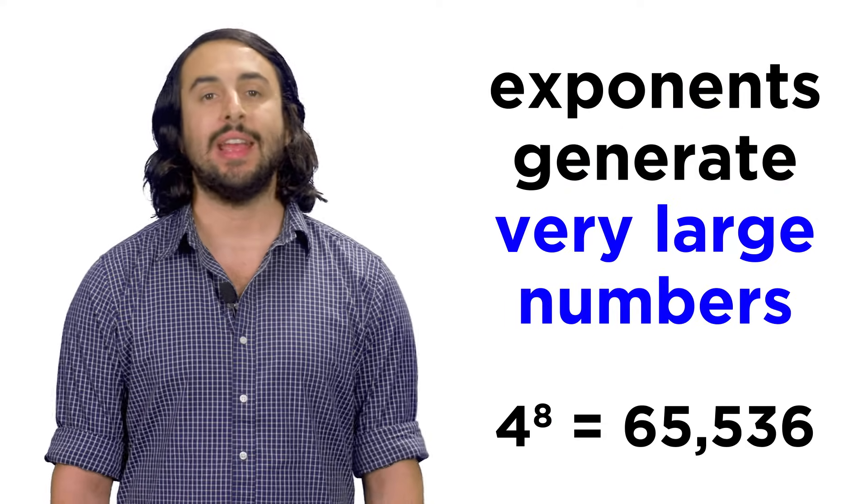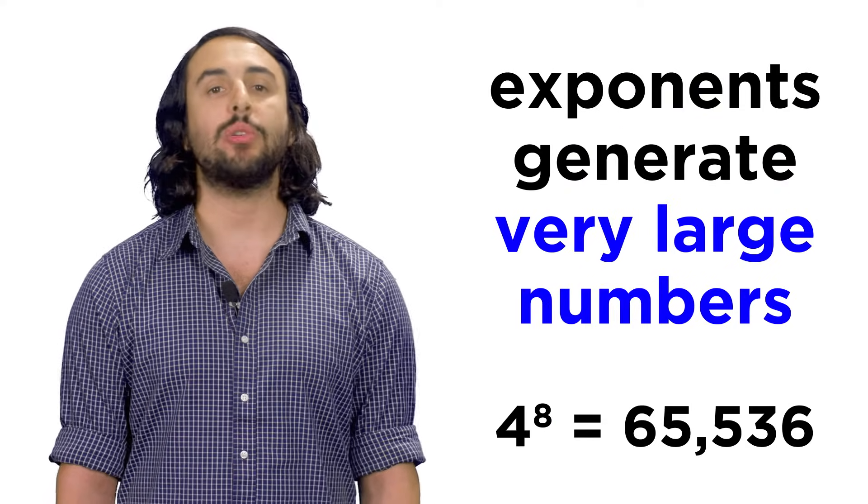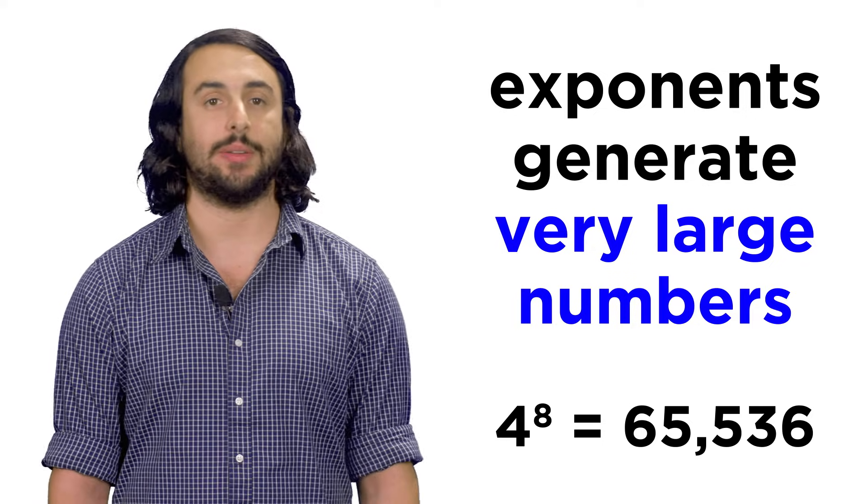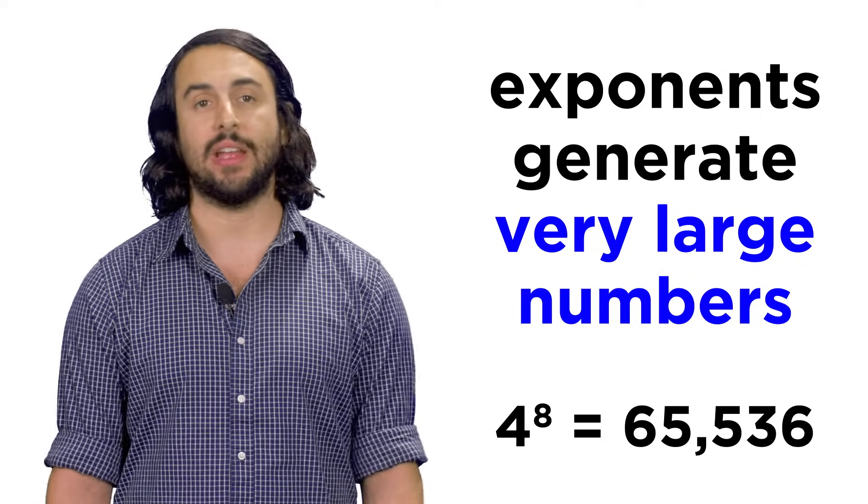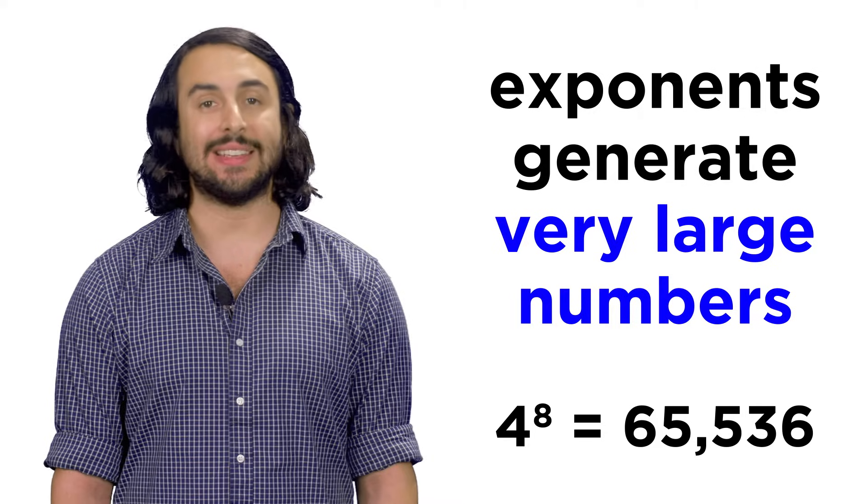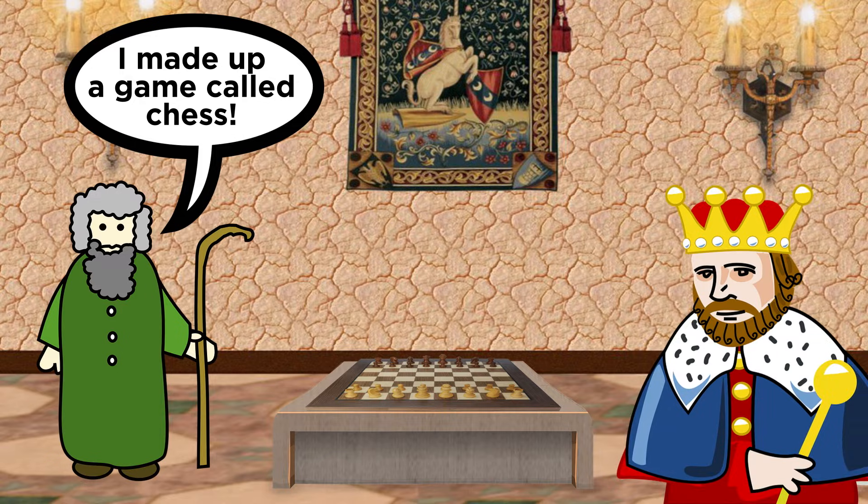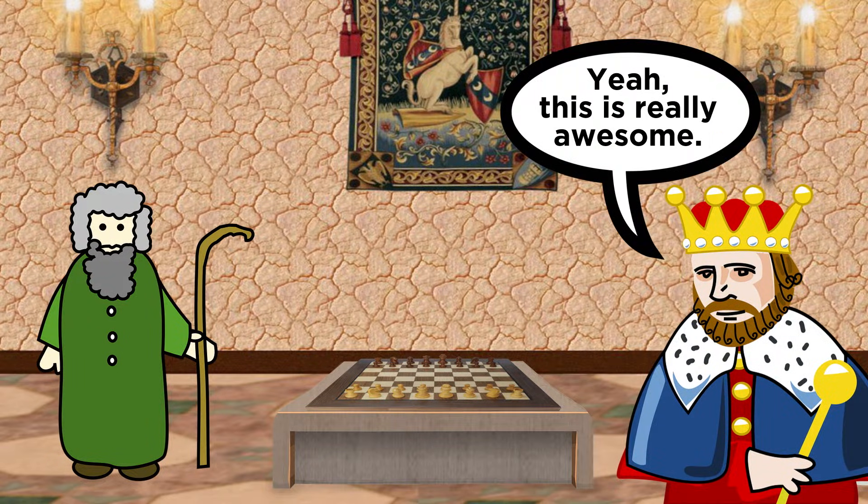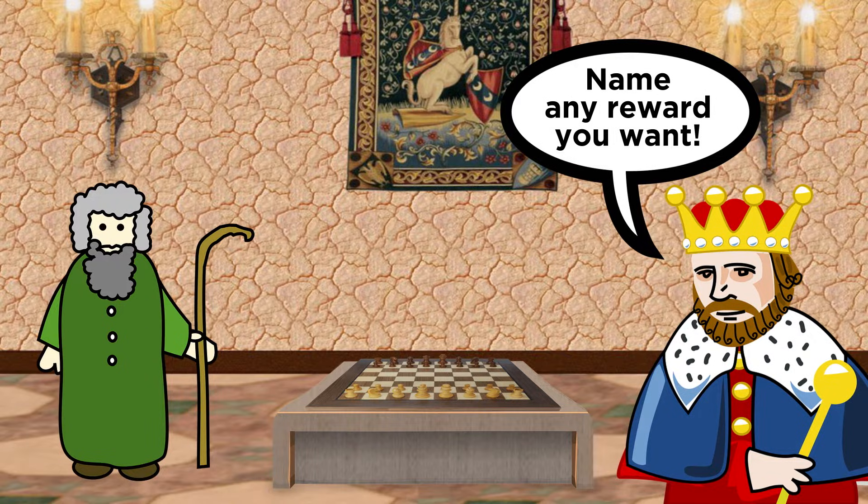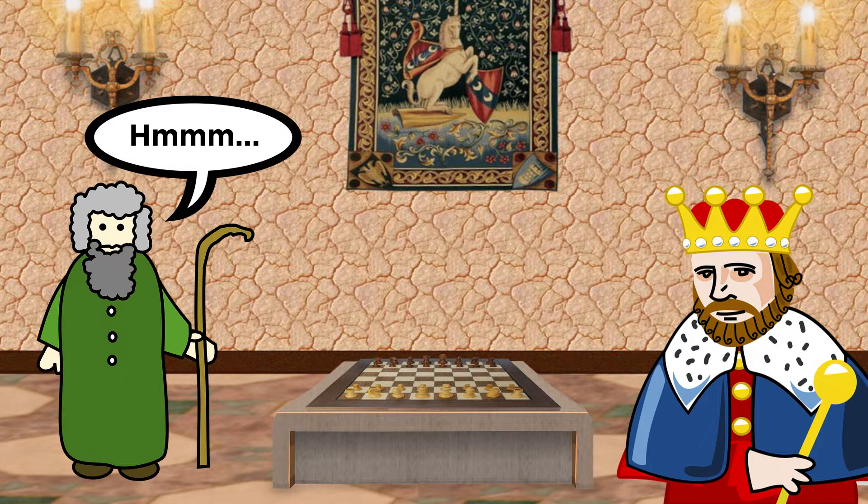One thing we will notice immediately is that with exponents, numbers get very big very fast. To see exactly how big, let's examine an old Indian legend, which goes like this. A wise man invented the game of chess, which the king immediately adored. He liked it so much that he offered the wise man any reward of his choosing. Being a shrewd mathematician, his request went as follows.